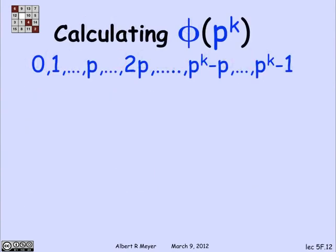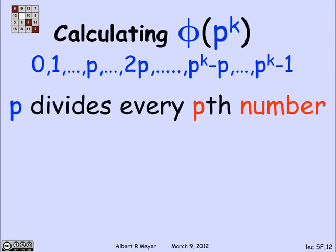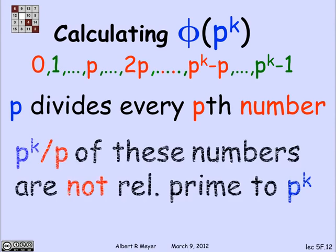This generalizes to a power of a prime. If k is a positive integer, then phi of p to the k, the reasoning is that a number is relatively prime to p to the k if and only if it's relatively prime to p. p divides every pth number. So 1 pth of the numbers in the interval are bad, which means that phi of p to the k is the good ones minus 1 pth of p to the k.